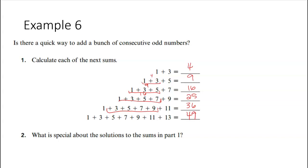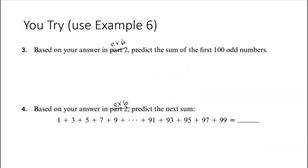And you may even start to be seeing a pattern here. We're just going to add 11 to that one. We're just going to add 13 to that. These look like the square numbers to me. 2 squared, 3 squared, 4 squared, 5 squared. So what is special about the solutions? These are the square numbers.